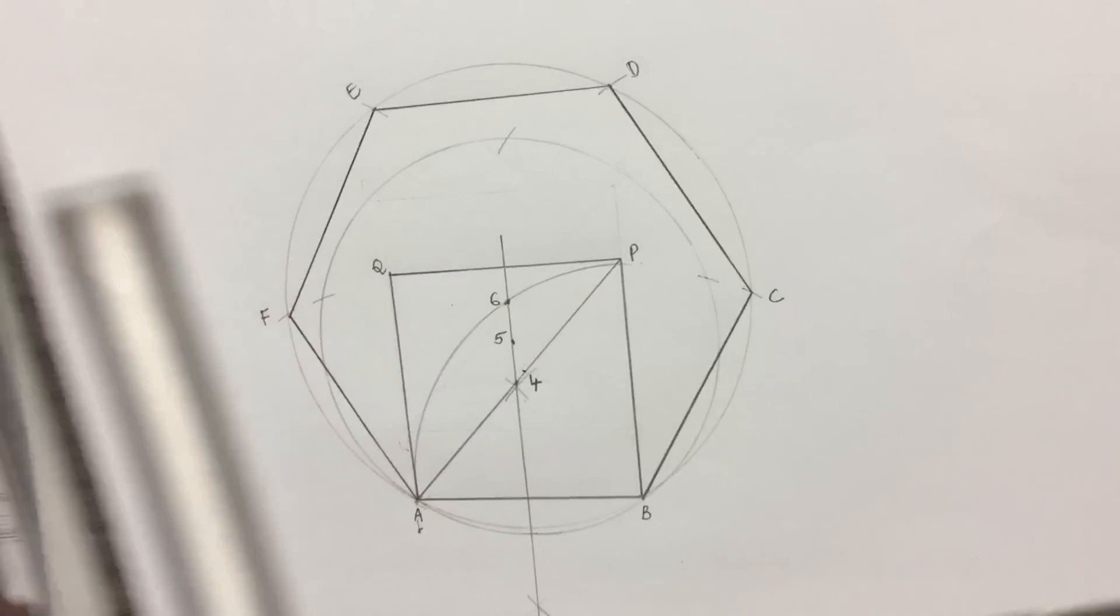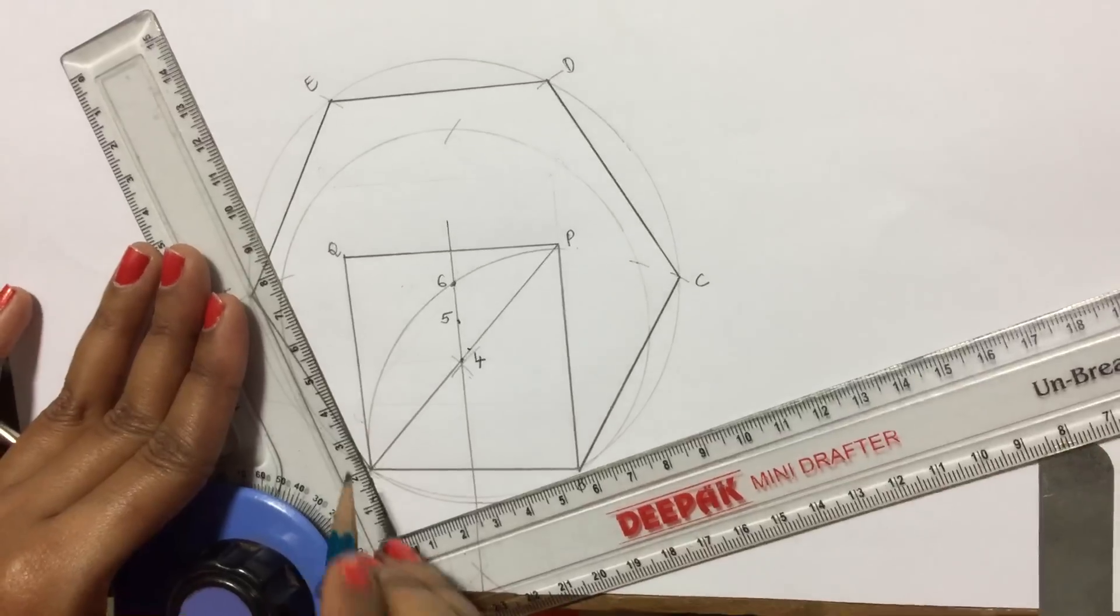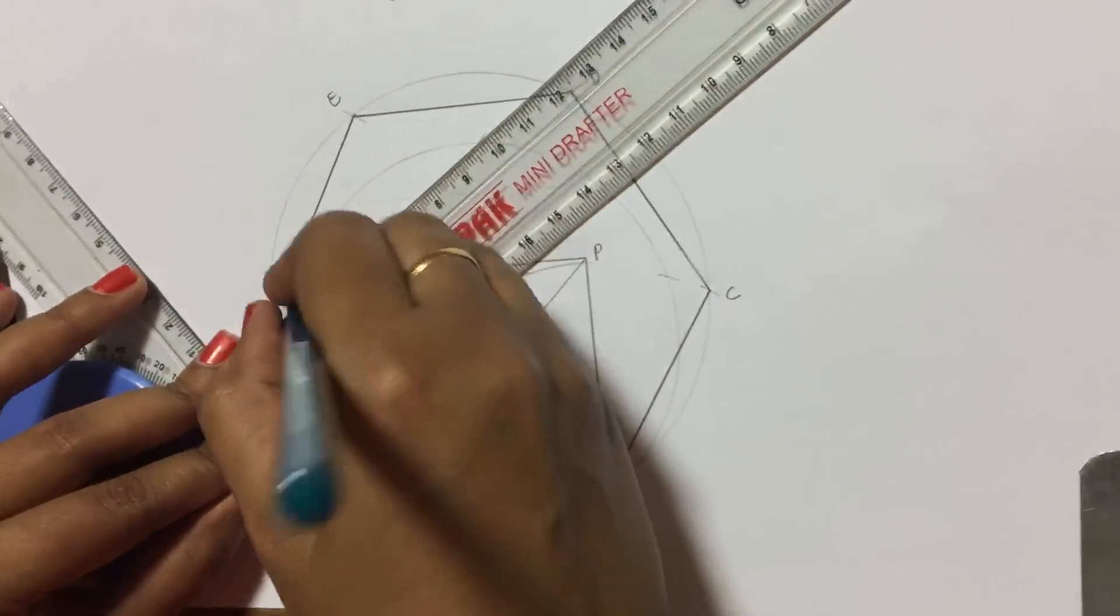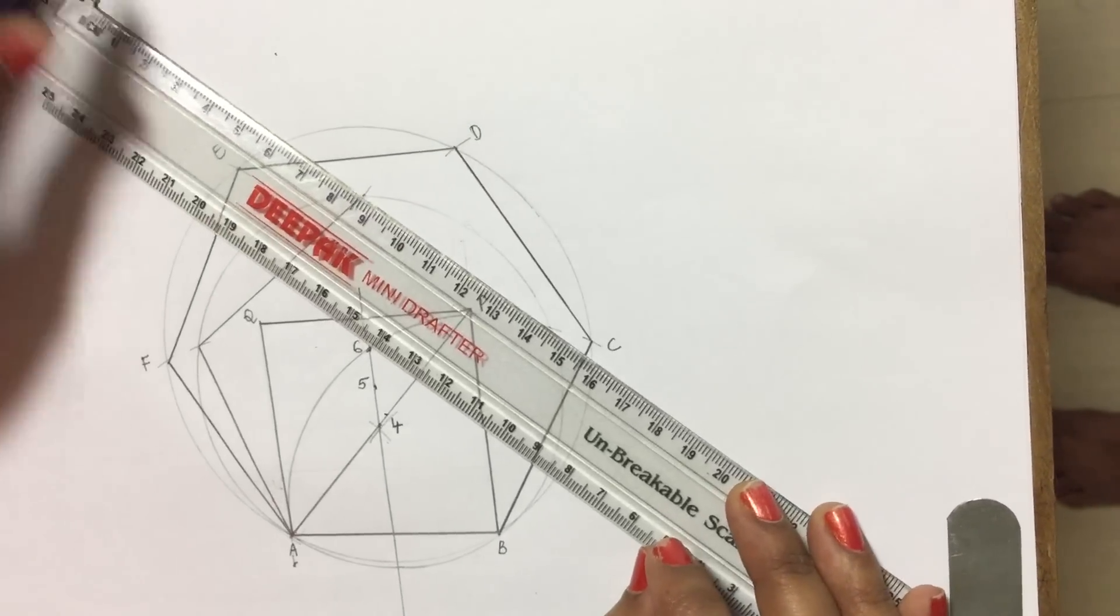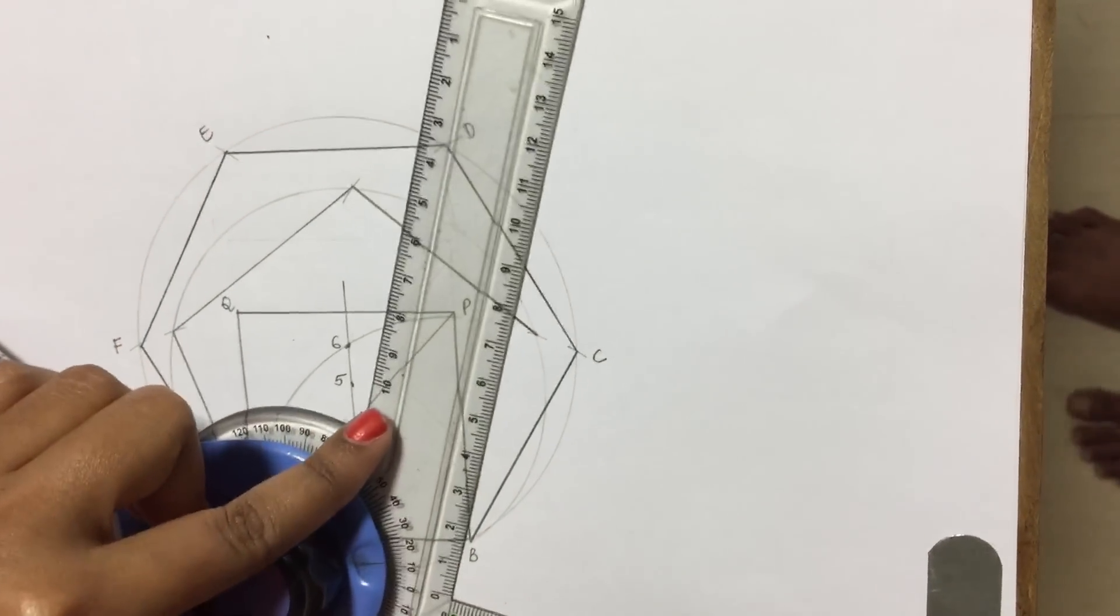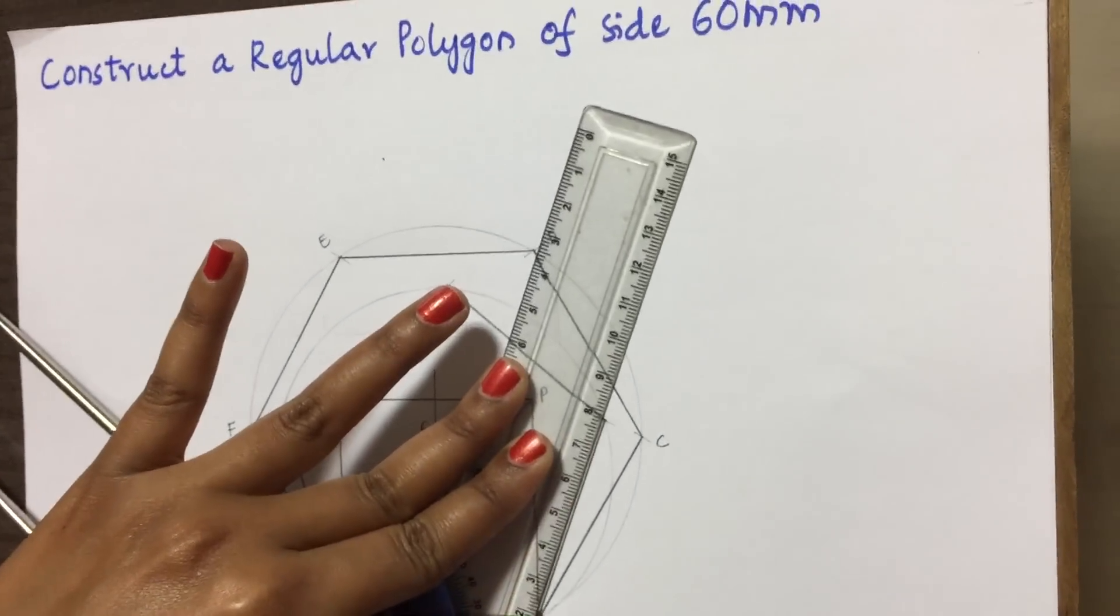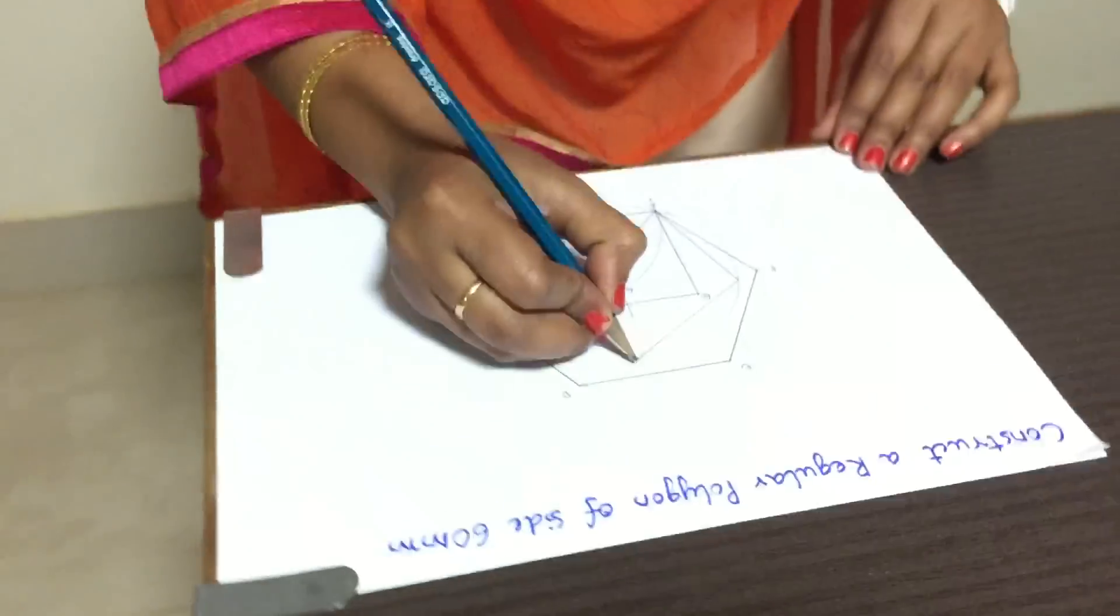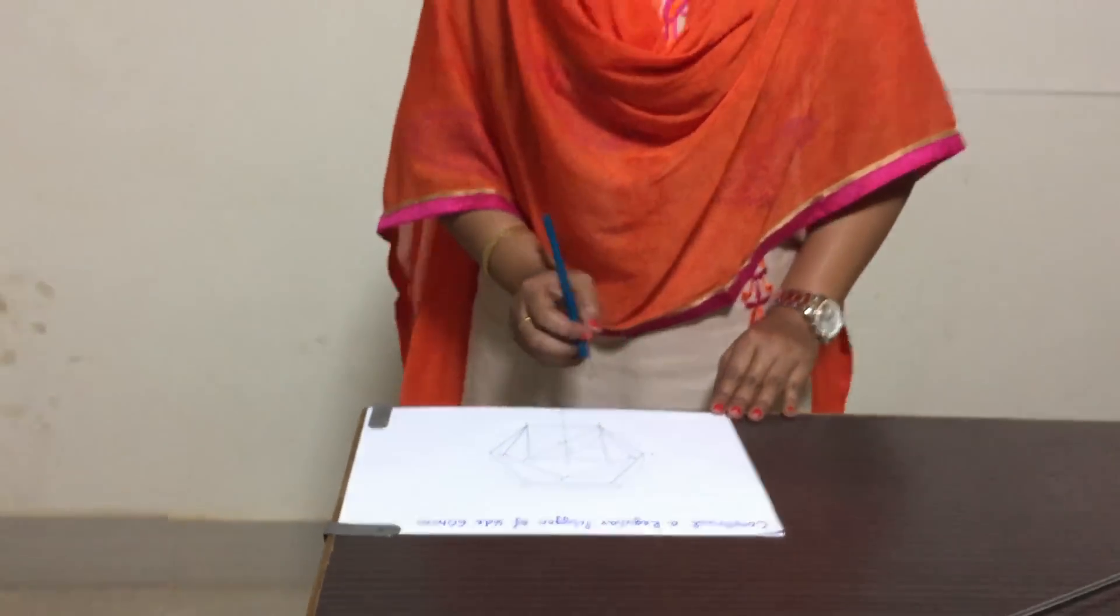Now join all these arcs to form a pentagon. Name this as A, B, C, D and E. Now we have drawn a regular pentagon.